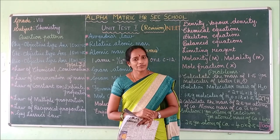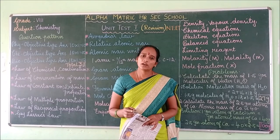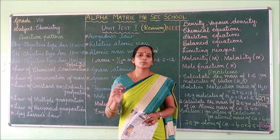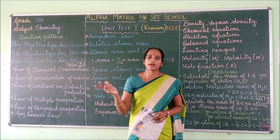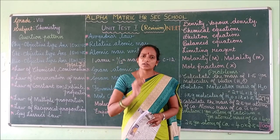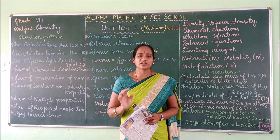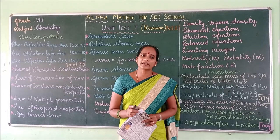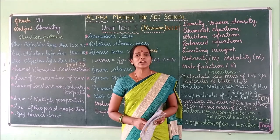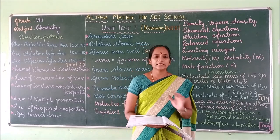What are the five laws? Law of conservation of mass, law of constant or definite proportion, law of multiple proportion, law of reciprocal proportion, and Gay-Lussac's law. For each and every law, you should learn the scientist's name. For example, who proposed the law of conservation of mass? The answer is Lavoisier. Definitely you will get one question based on this, so learn all the scientists' names.